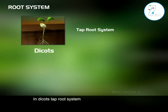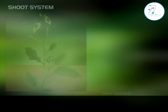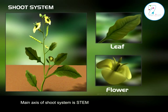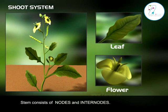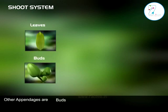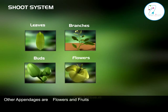Root system: in dicots, tap root system; in monocots, fibrous root system. Shoot system: the main axis of the shoot system is the stem. Stem consists of nodes and internodes. Other appendages are leaves, buds, branches, flowers, and fruits.